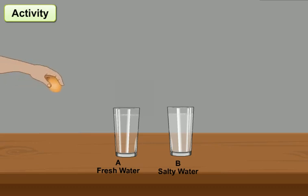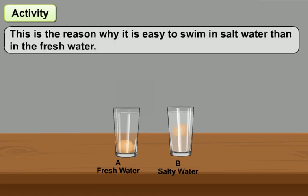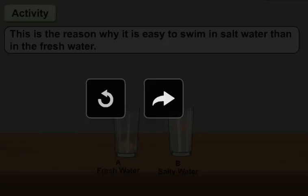Keep an egg in each glass. The egg in the fresh water glass A will sink, but the egg in the salt solution of glass B will float. This is the reason why it is easy to swim in salt water than in fresh water. I am able to swim.